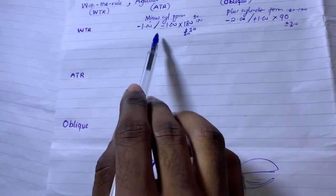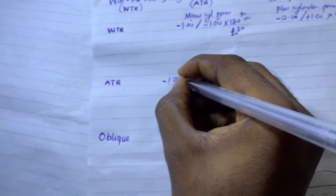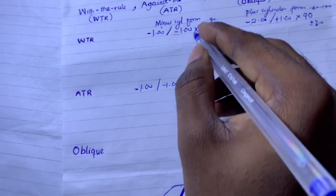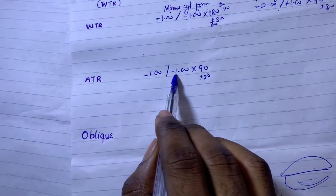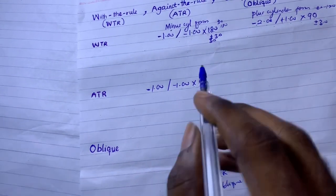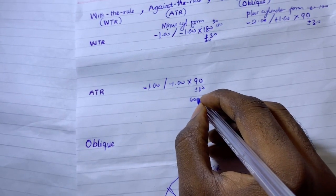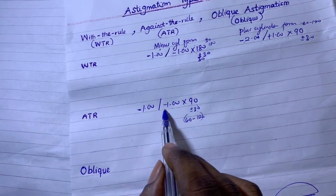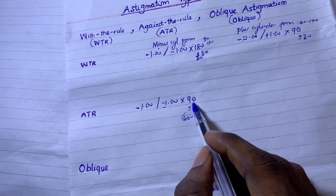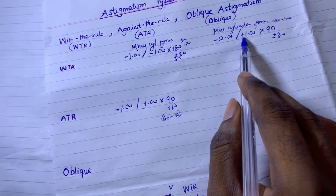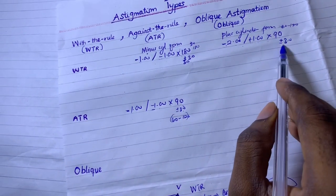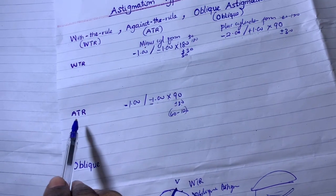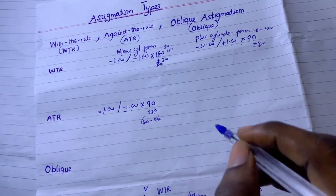For against-the-rule astigmatism in minus cylinder form: minus one combined with minus one, axis 90 plus or minus 30. That means the axis lies between 60 and 120. This is the opposite of with-the-rule. So a minus cylinder with axis between 60 and 120 qualifies as against-the-rule astigmatism.